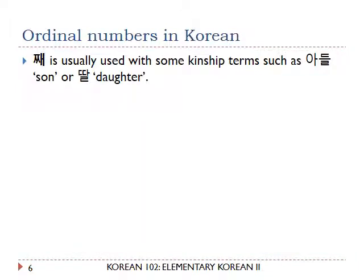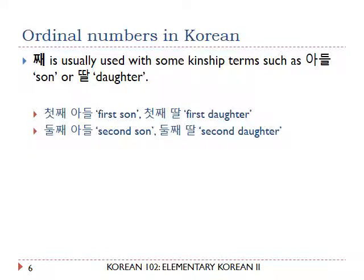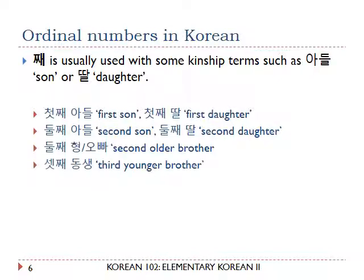The counter 째 is usually used with kinship terms such as 아들, 딸, 형, 오빠, 동생, 언니. For example: 첫째 아들 means 'first son,' 첫째 딸 means 'first daughter,' 둘째 아들, 둘째 딸. You can also say 둘째 형, 둘째 오빠 (second older brother), 셋째 동생 (third younger sibling), 넷째 누나 or 언니 (fourth older sister), and so forth.